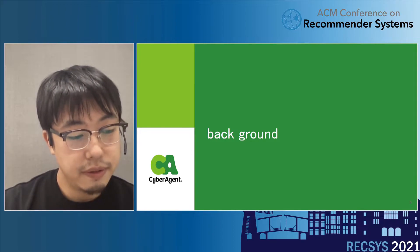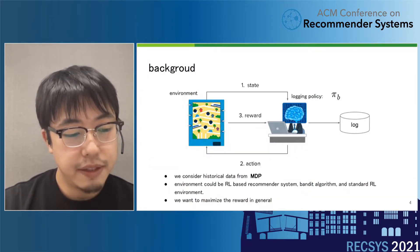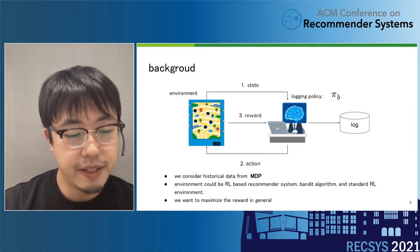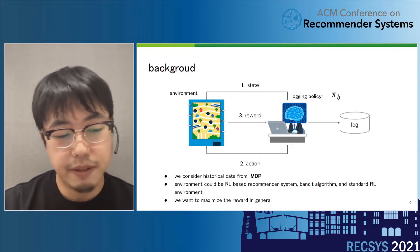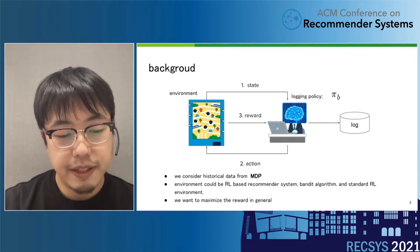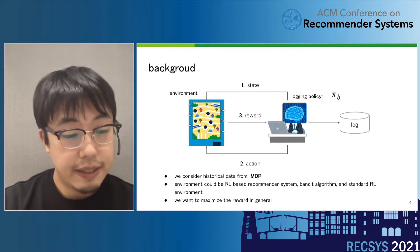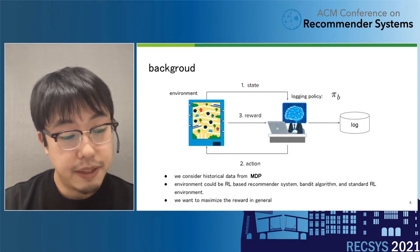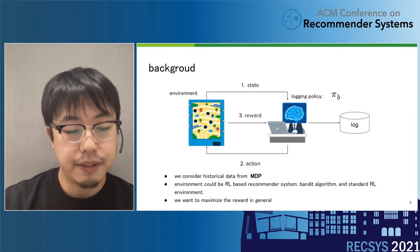Let me explain the background. We consider historical data from the Markov decision process. There is an environment and a policy. We can observe a state from the environment, then the policy takes an action based on the state, and as a result, we observe the reward.